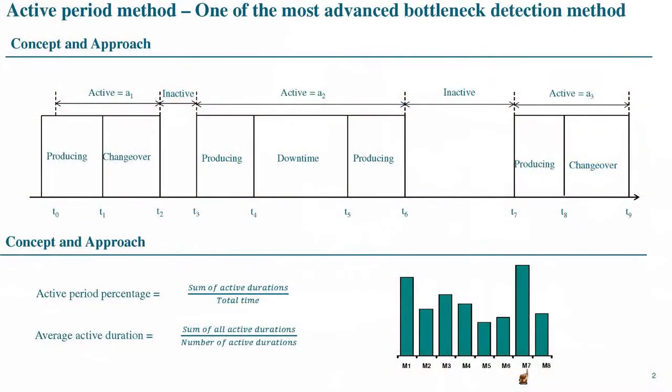In this project, we used an established method developed by the Toyota Motor Company to detect and predict the bottlenecks, called the active period method. The principle behind the active period method is that it classifies the machine into two states: the active state and the inactive state. The active state is when something is going on with the machine, whereas the inactive state is when the machine is waiting for products to be produced or for the operator to act. The more the machine is in the active state, the more likely it is to be a bottleneck.